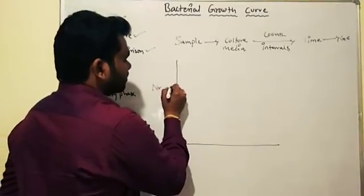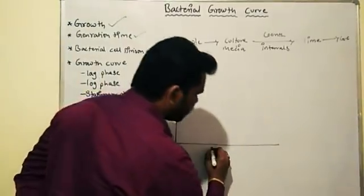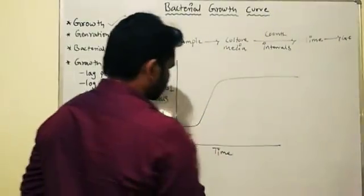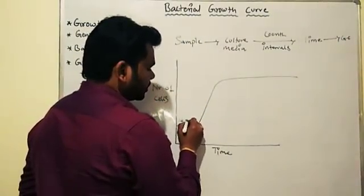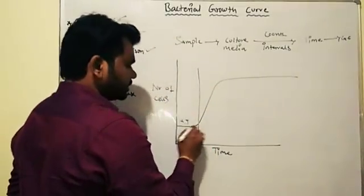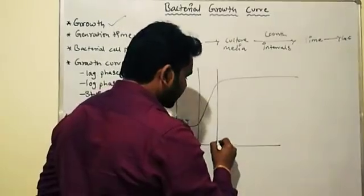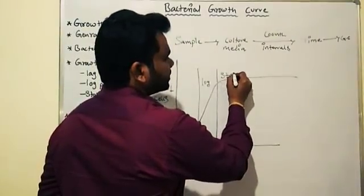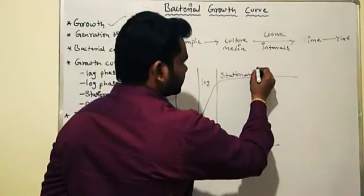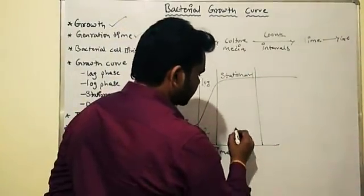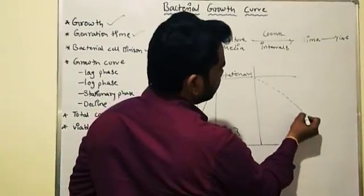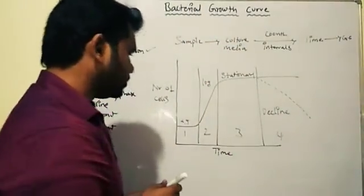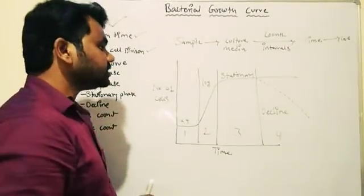Here on the graph, the Y-axis represents number of cells and the X-axis represents time. The growth curve is divided into four phases: the first is lag phase, the second is log phase, the third is stationary phase, and the fourth is decline phase.